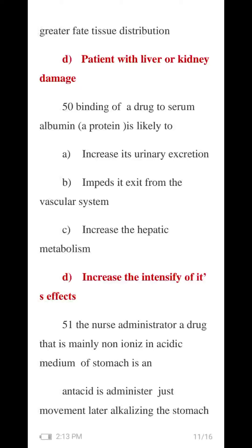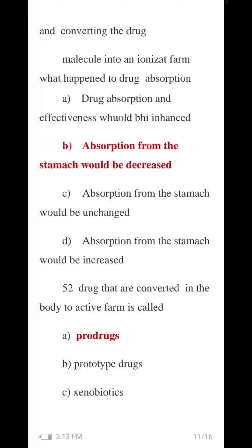Question 51 MCQ: A drug that is mainly non-ionized in the acidic medium of the stomach, when an antacid is administered — alkalizing the stomach and converting the drug molecule into an ionized form — what happens to drug absorption? The B number option is correct: absorption from the stomach would be decreased.